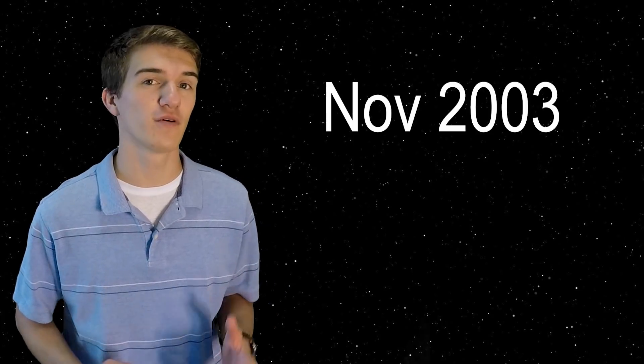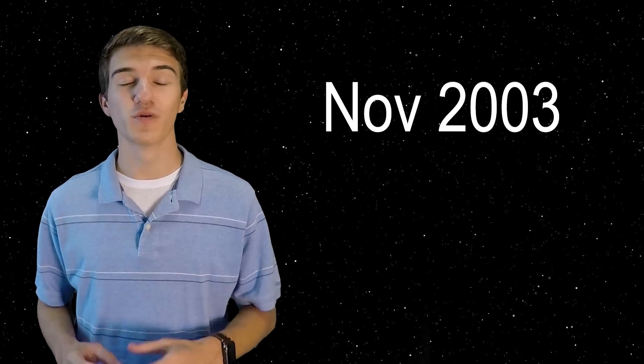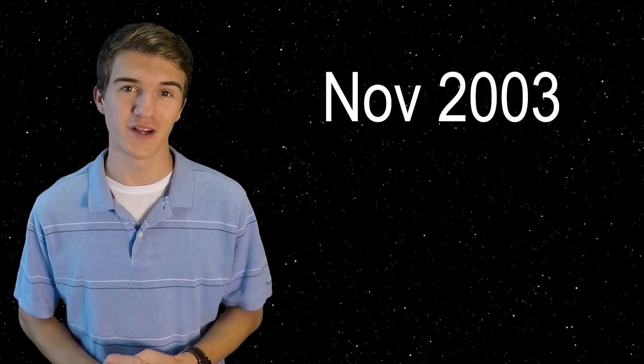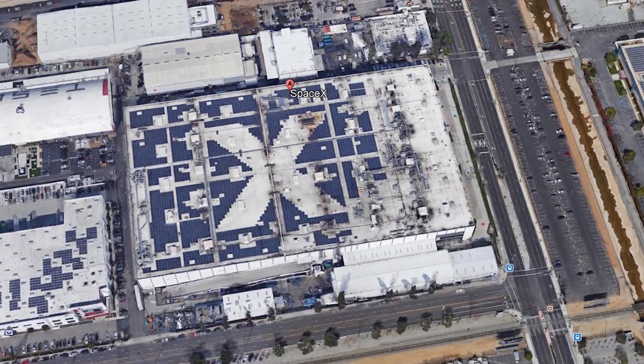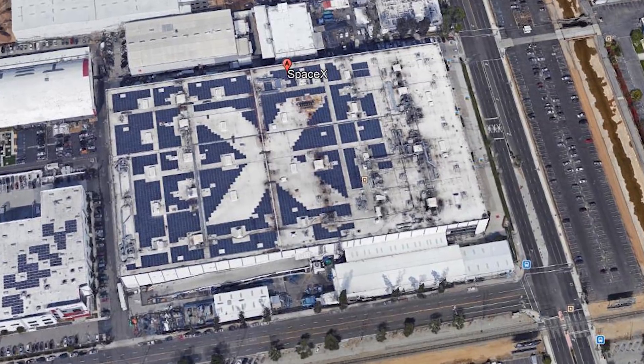At the time when the company was formed, Elon Musk said that he would try and get the first Falcon 1 launch to occur in November of 2003, which was only 15 months after the formation of the company, which is pretty quick to develop your very first rocket. The headquarters of SpaceX was based in Los Angeles. However, the entire team knew that if they were going to be developing rockets, they would also have to be developing the engines that power those rockets.